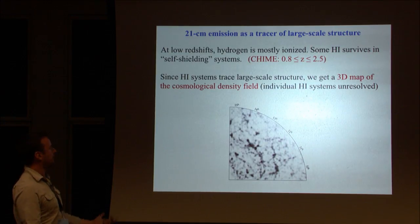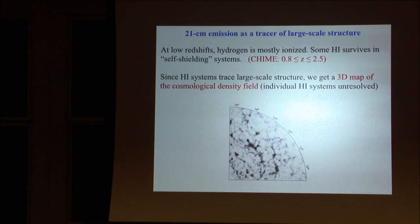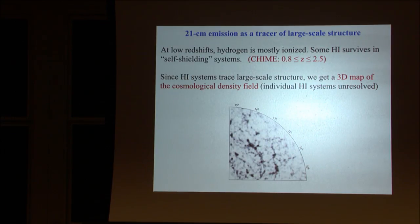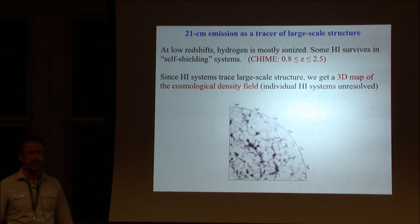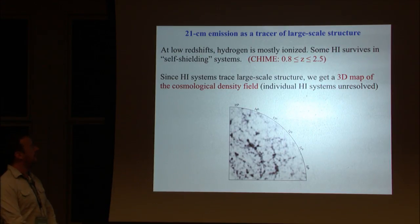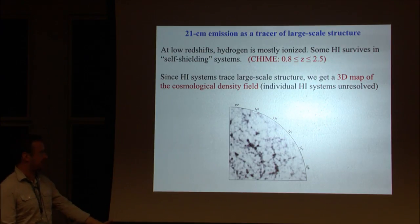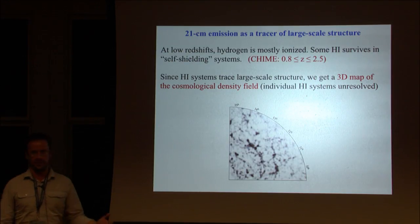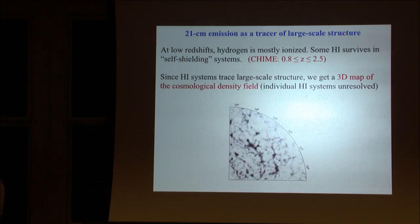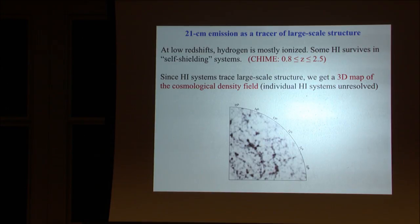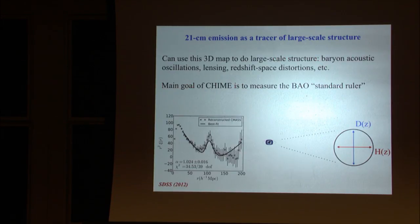CHIME measures 21 centimeter anisotropy in a different redshift range. At low redshifts, the universe is mostly ionized, but some neutral hydrogen survives since dense clouds can self-shield. The signal to noise for measuring 21 centimeter fluctuations at the epoch of reionization and at CHIME redshifts is about the same. By mapping out these fluctuations, you get a 3D map of the cosmological density field. Individual systems are not resolved by the CHIME beam, but we're comfortable measuring modes of a random field with statistical noise.